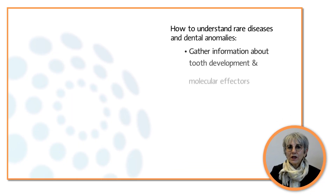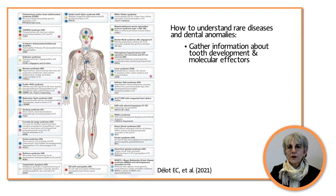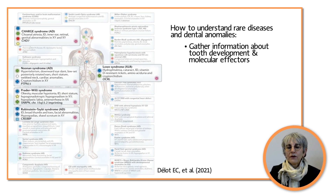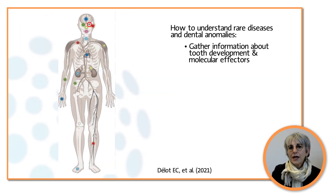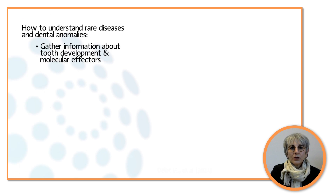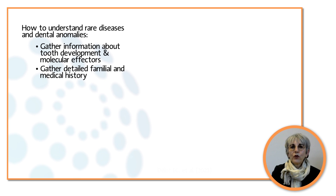To understand rare diseases and their associated dental anomalies, it is important to gather information about tooth development and the molecular effectors involved. Indeed, embryonic development of the mouth and teeth is governed by the same genes and regulatory systems that control the formation of other tissues and organs, such as the eye, kidney, heart, immune system, nervous system, and bone. It is therefore critical to take a detailed familial and medical history, as well as to perform a precise examination of the oral cavity and other systems, seeking additional associated features.